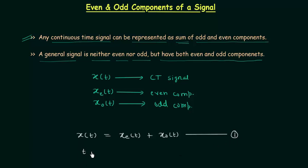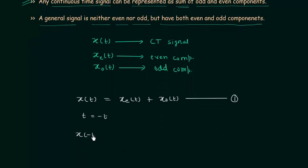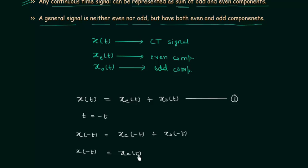Now we will put t equal to minus t in equation number 1. This means we will perform folding or time reversal. Since x_e(-t) equals x_e(t) and x_o(-t) equals minus x_o(t), as completed in the last lecture, this gives us x(-t) equal to x_e(t) minus x_o(t), and let's call this equation number 2. Using these two equations we will find the even and odd components of x(t).